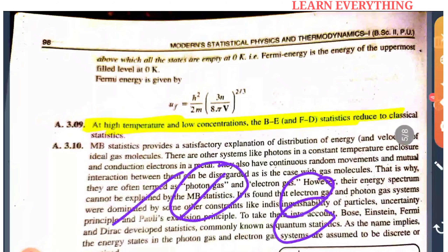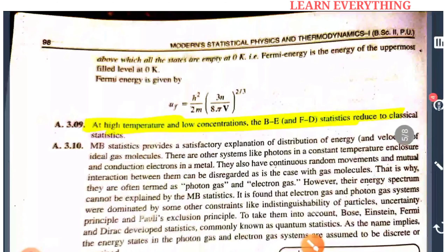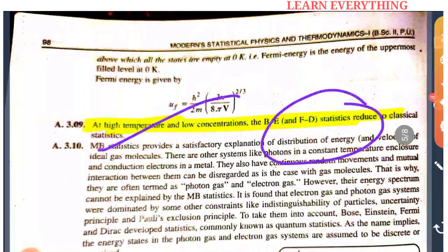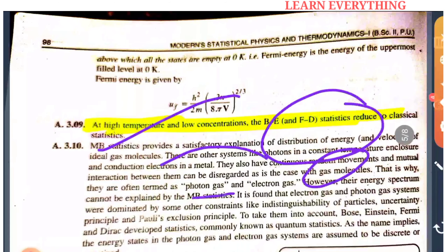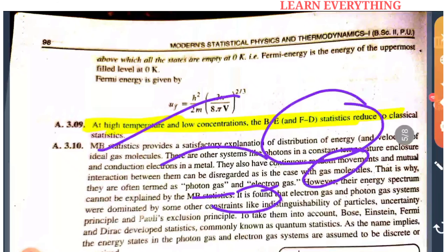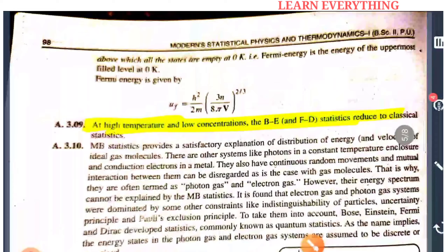So for photon gas and electron gas we need quantum statistics — Bose-Einstein and Fermi-Dirac respectively. The energy states in these systems are assumed to be discrete and quantized. We must deal with quantum statistics to handle these systems properly.